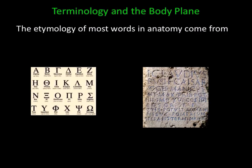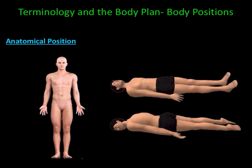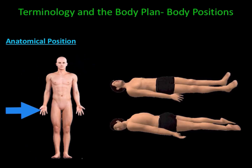In this lecture we're going to go over directional terms used in anatomy and physiology. The etymology or origins of words in anatomy come from Latin or Greek. The first term we are going to discuss is anatomical position. Anatomical position by definition is standing erect, eyes forward, palms forward, and toes forward.